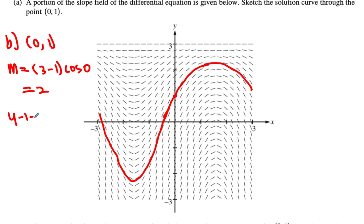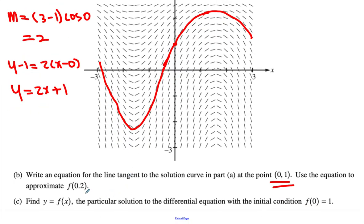Now what is our equation? Y minus 1 equals 2 times (x minus 0). When you simplify this, we get y equals 2x plus 1. Now I want you to approximate 0.2. So f of 0.2 based upon this can be approximated by 2 times 0.2 plus 1. We get 1.4 would be our answer.